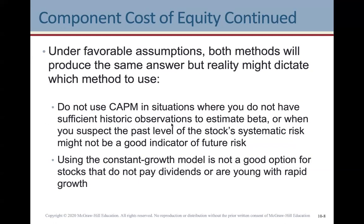Do not use CAPM in situations where you don't have sufficient historical observations to estimate beta reliably, or when you suspect that the past level of a stock's systematic risk might not be a good indicator of future risk — for example, when there have been significant changes to the company that substantially alter its risk profile. Events like the war in Ukraine, for instance, have had drastic effects on stock and capital markets.